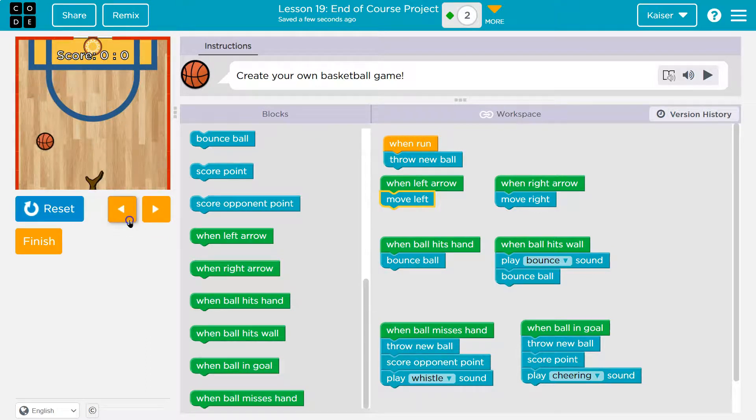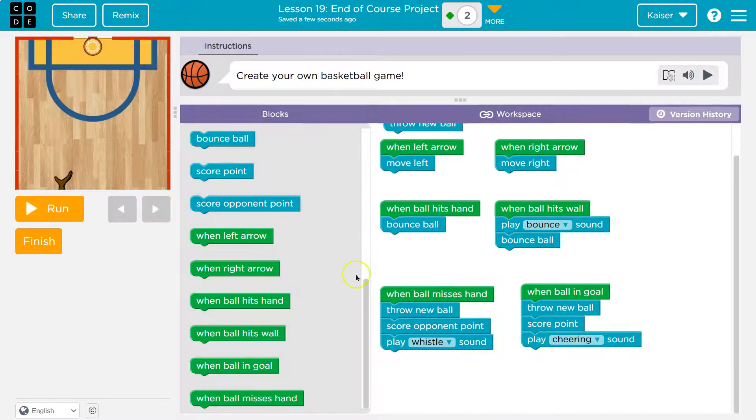And then we can do all sorts of fun things with this game. For instance, each time my opponent scores, I could have the ball slow down, because maybe I need it to be a bit easier. And then each time I score, maybe I want the ball to speed up, so it becomes harder. That would be a fun thing to add. I think I'll actually add that.